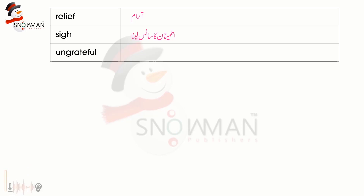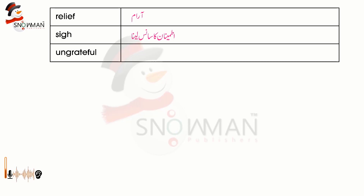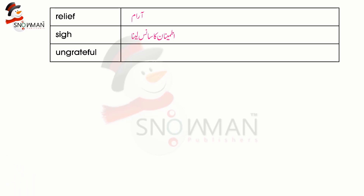Ungrateful — Nashukra. آپ بچوں کو بتا سکتے ہیں کہ یہ 'Un' جو ہے یہ ایک prefix ہے۔ یعنی UN ہم ایک سے زیادہ words کے پہلے لگا کر نئے الفاظ بنا لیتے ہیں۔ جیسے ایک سادہ مثال ہے — undo۔ Do کے معنی کرنا اور undo اسے واپس لے آنا، یعنی کرنے کے بعد اسے undo کر دینا۔ Grateful — ہم عام گفتگو میں استعمال کرتے ہیں، جیسے I'm grateful to you۔ Un لگا کر ہم نے اسے کر دیا Ungrateful — Nashukra۔